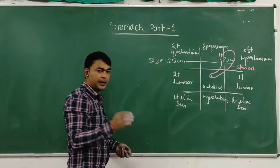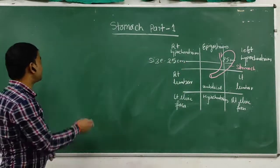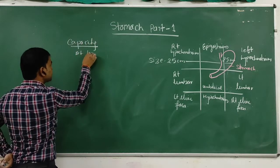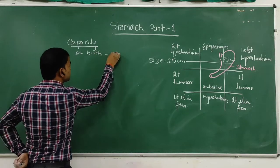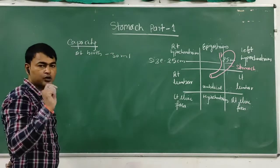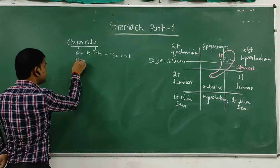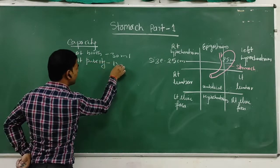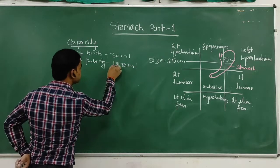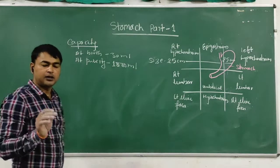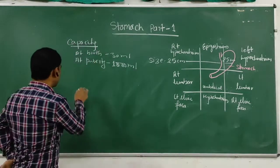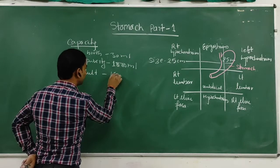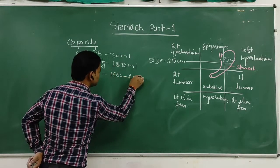The capacity of the stomach also varies. At birth the capacity is about 30 milliliters, which is about 1 ounce. In an adult, the capacity is about 1,500 to 2,000 milliliters.